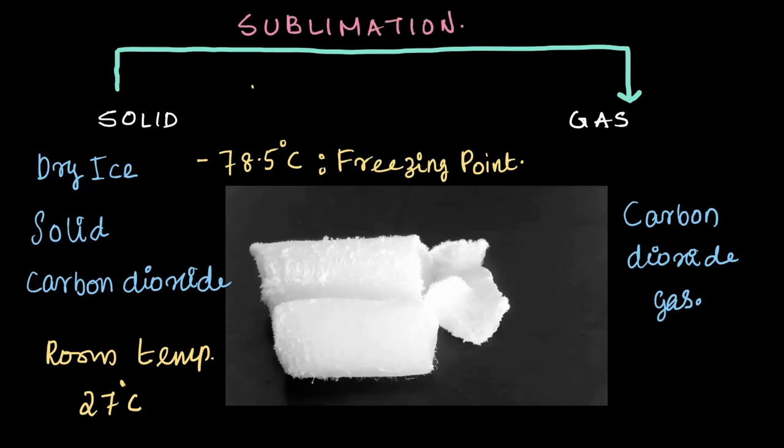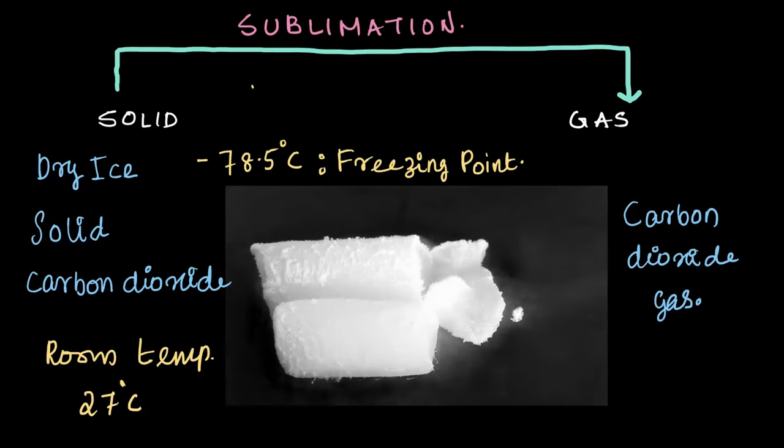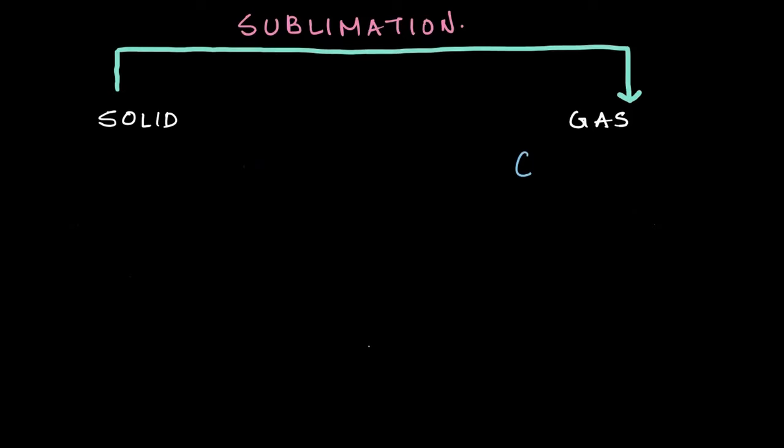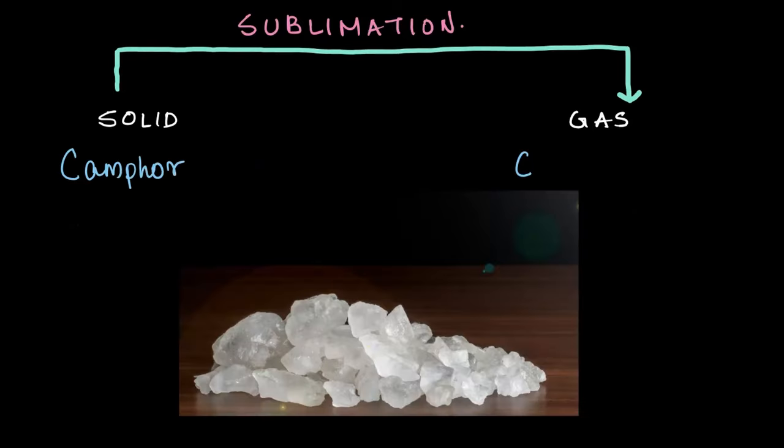This special process is called sublimation. You can see it in action here in this video. The dry ice goes straight from solid form to a gas as it sits at room temperature, skipping the liquid state entirely. Another example of conversion of solid to gas directly would be camphor.